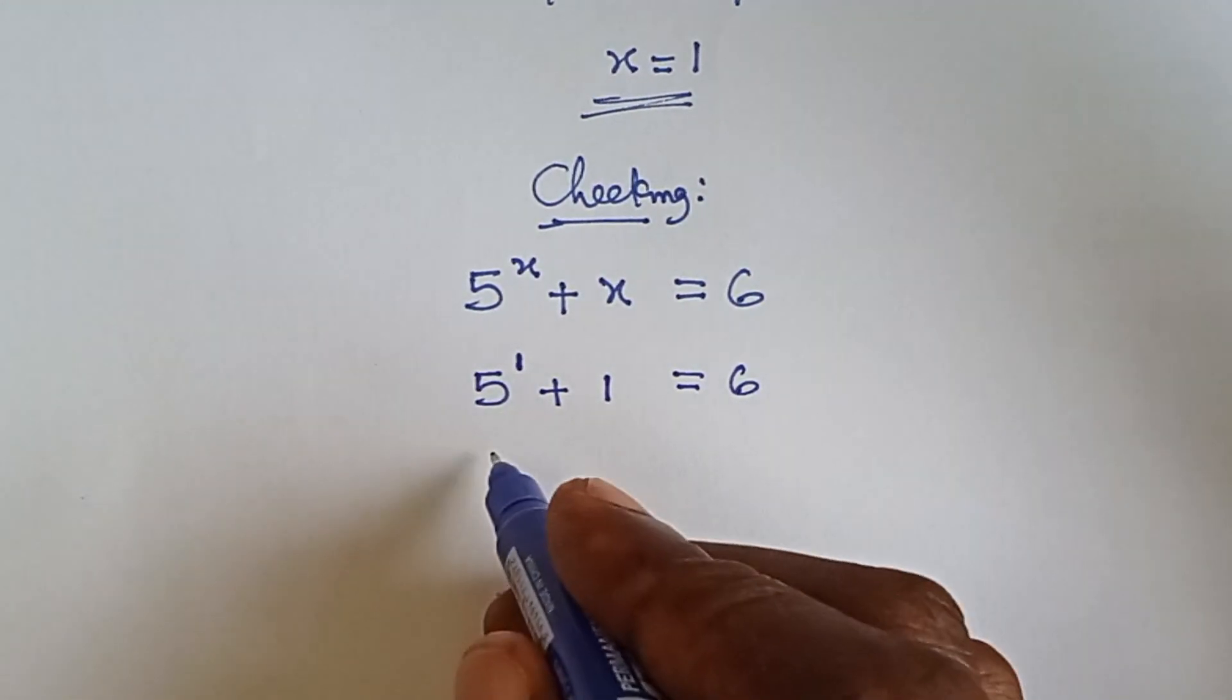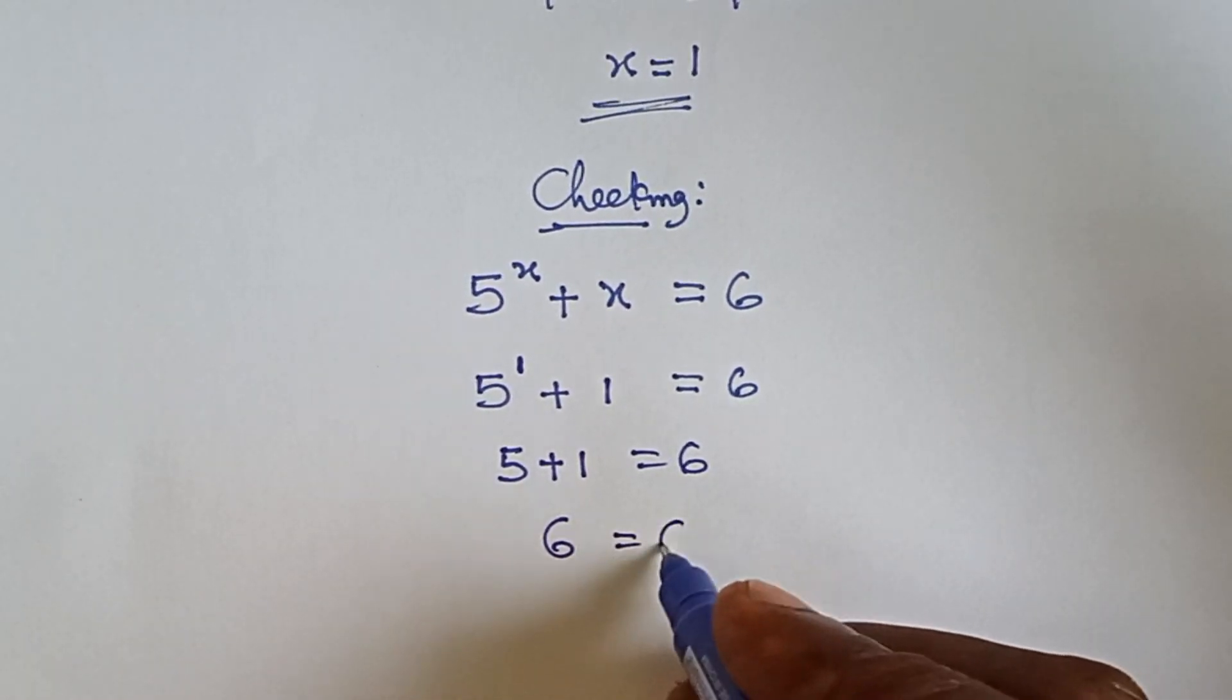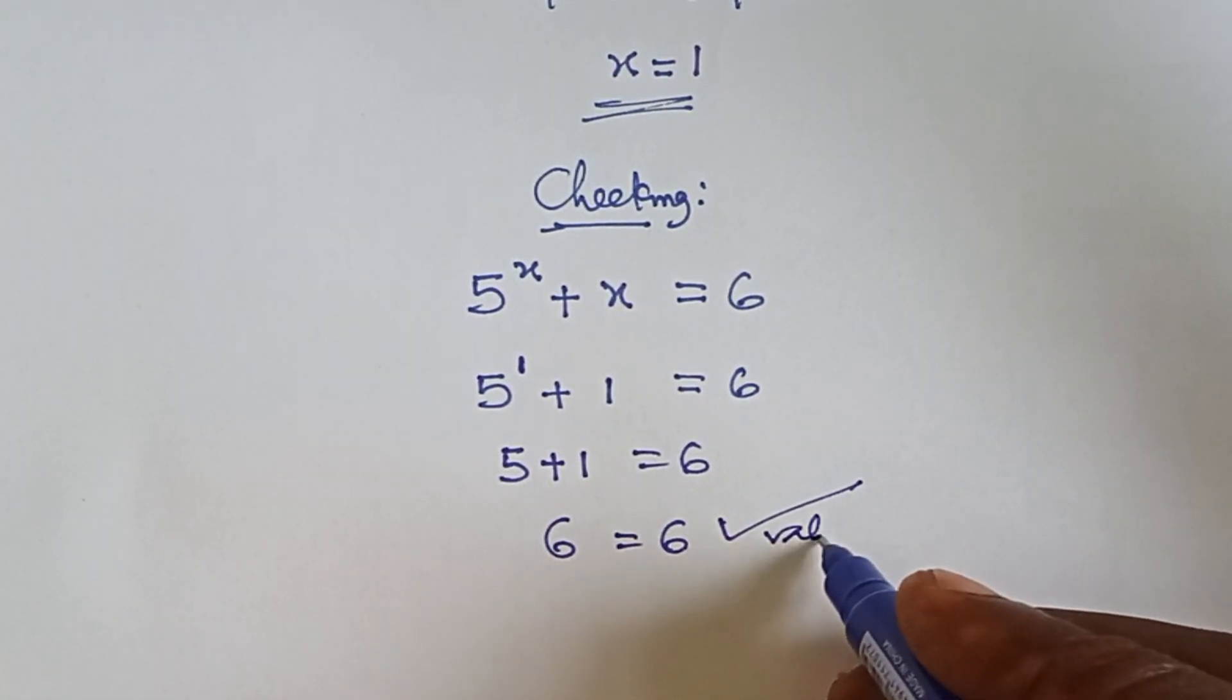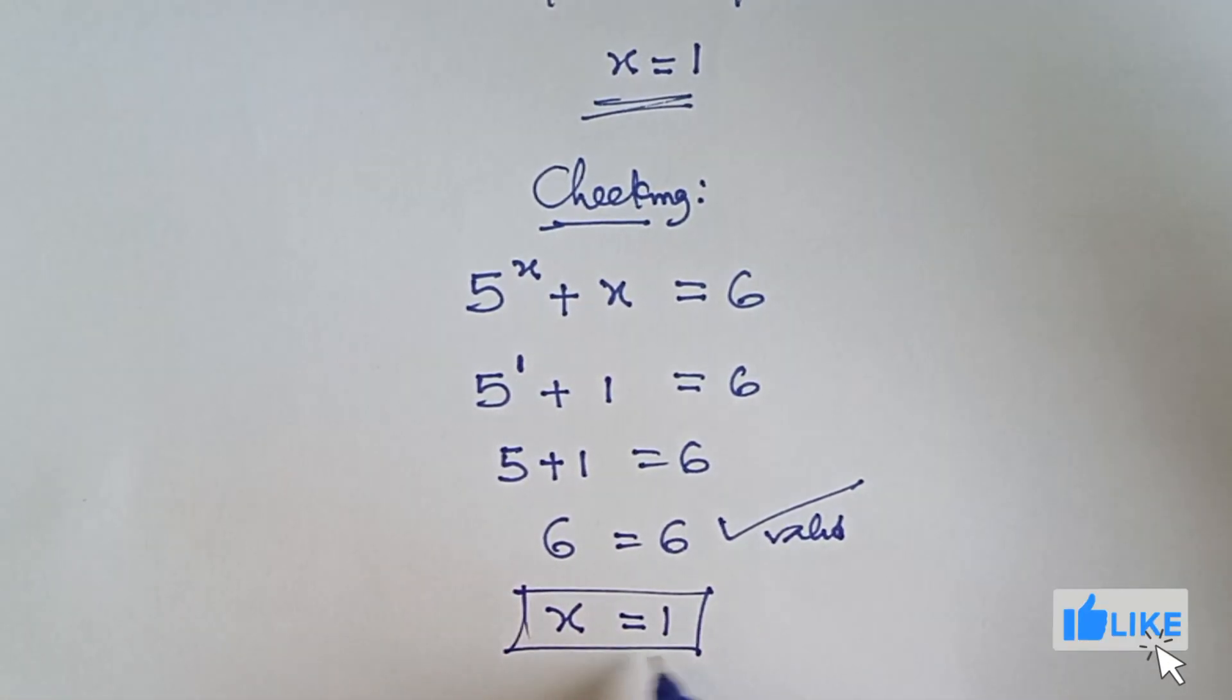5 raised to the power 1 is the same thing as 5. So, we have 5 plus 1 equals to 6 and that is 6 equals to 6. That shows that our answer x equals to 1 is valid.